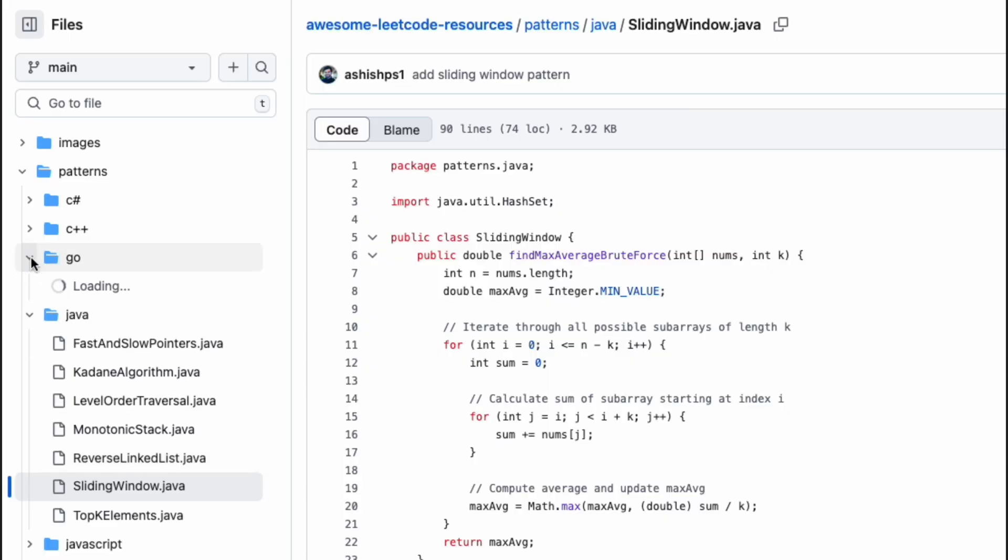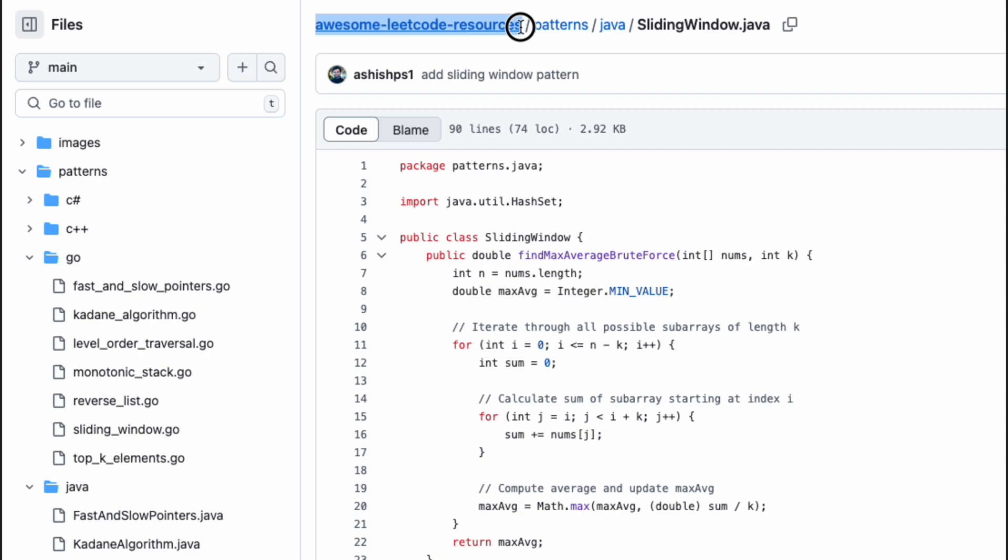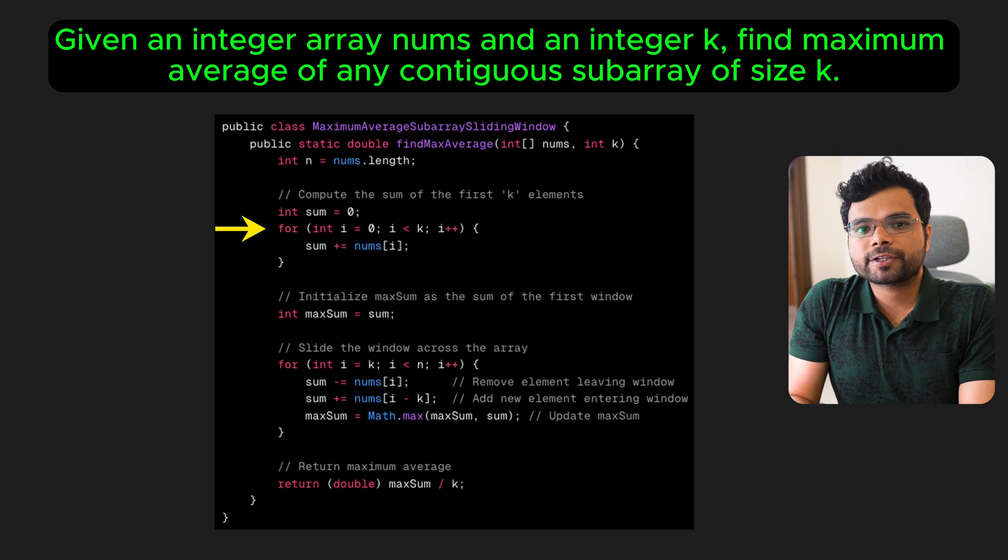Here I am using Java, but you can find the code for other popular programming languages in my GitHub repository called awesomeLeadCodeResources. Link is in the description. First, calculate the sum of the first k elements to initialize the window. Initialize maxSum to the sum of the first window.